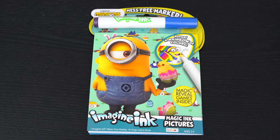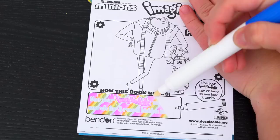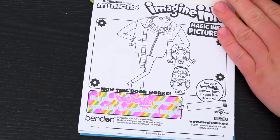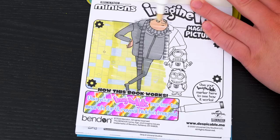Okay, so first we need to remove our Imagine Ink marker. It says use your Imagine Ink marker to search for and reveal hidden images! Let's try it out on this picture up here!